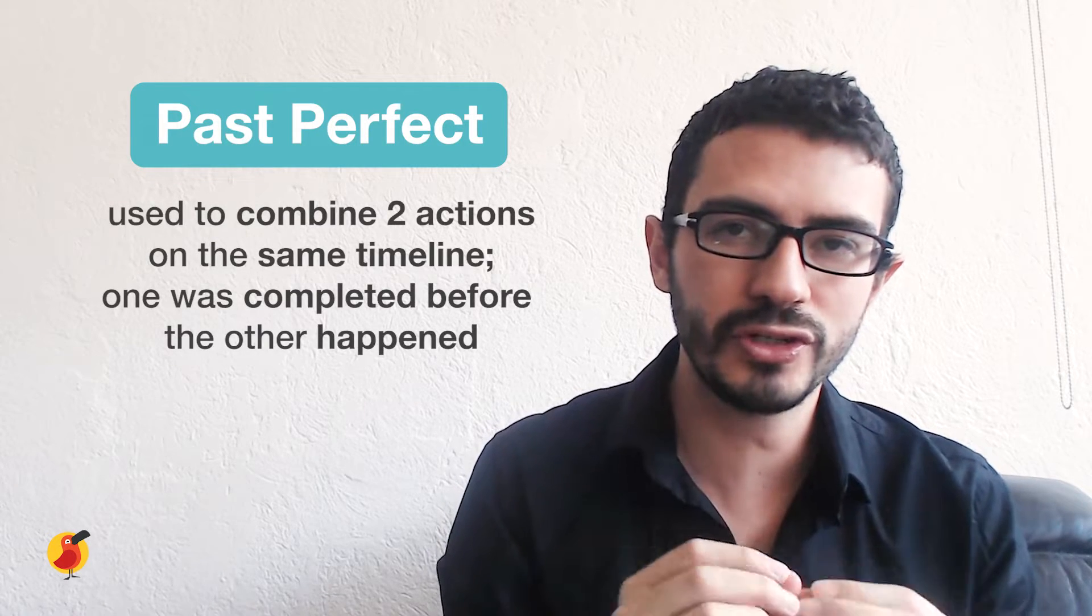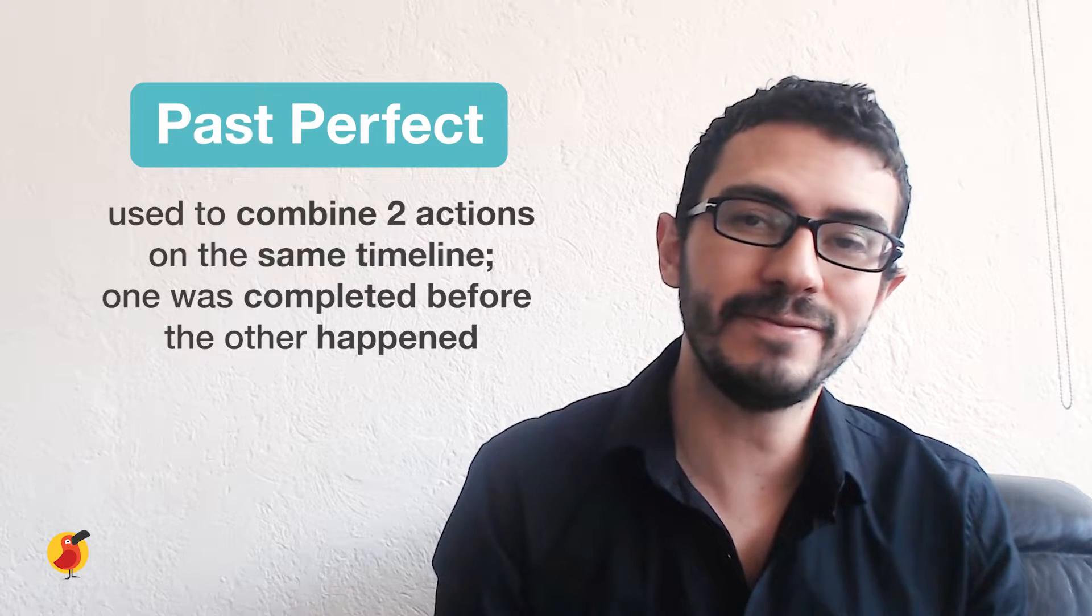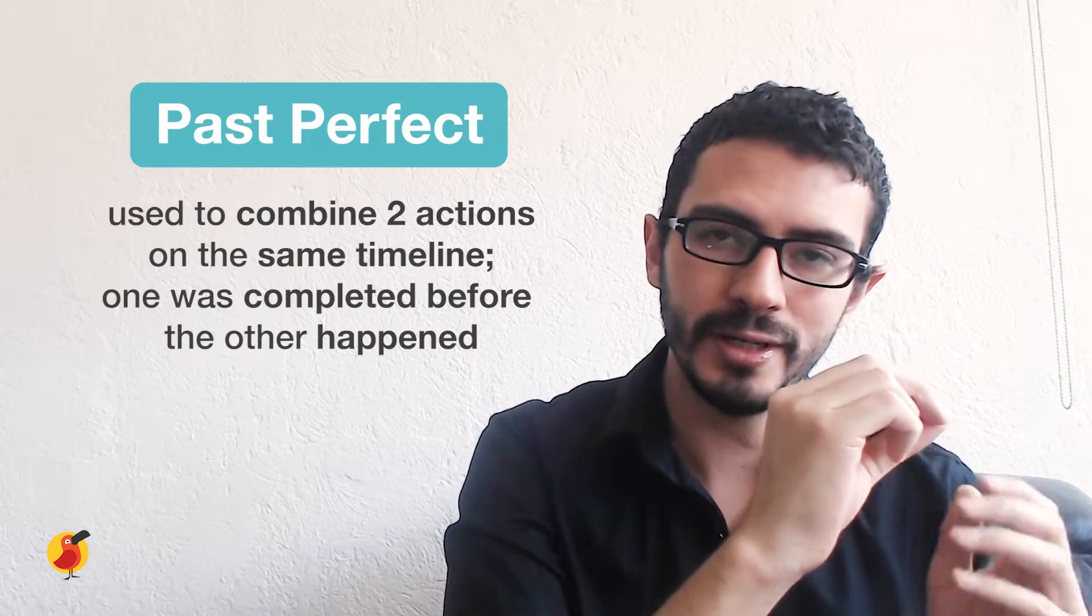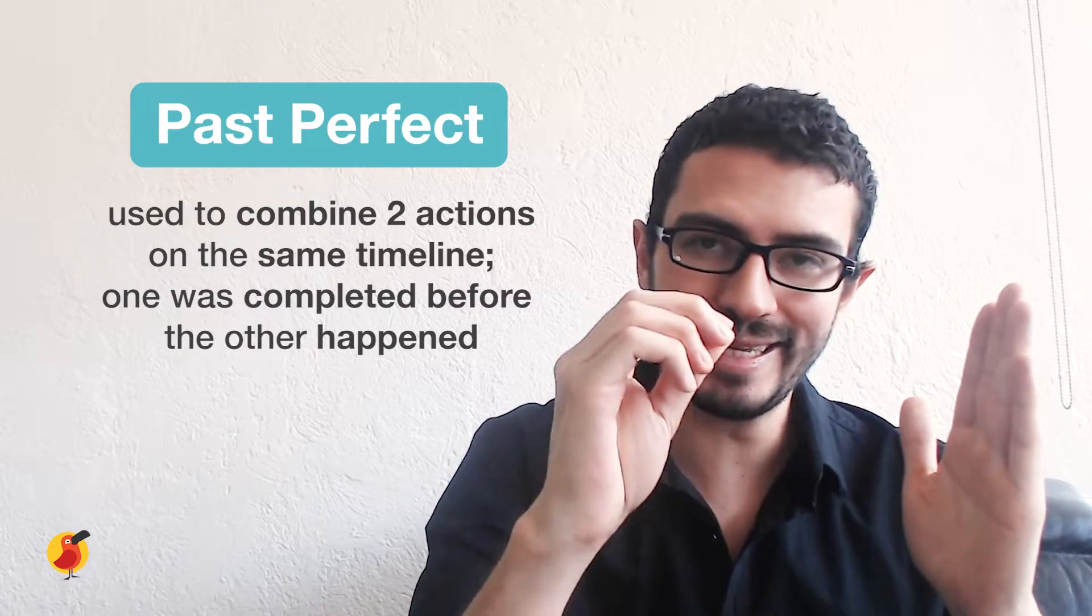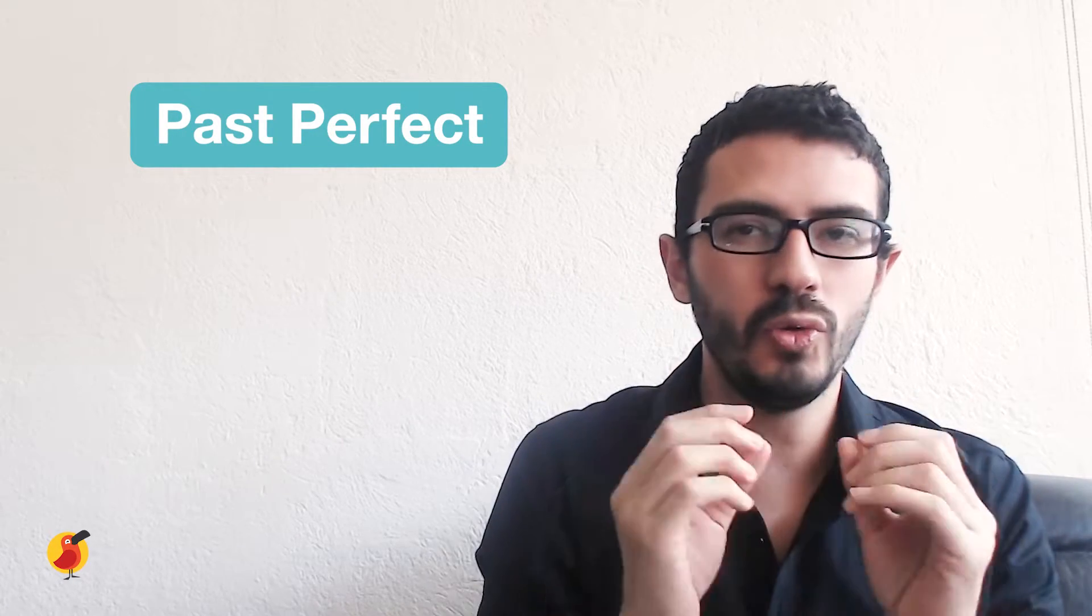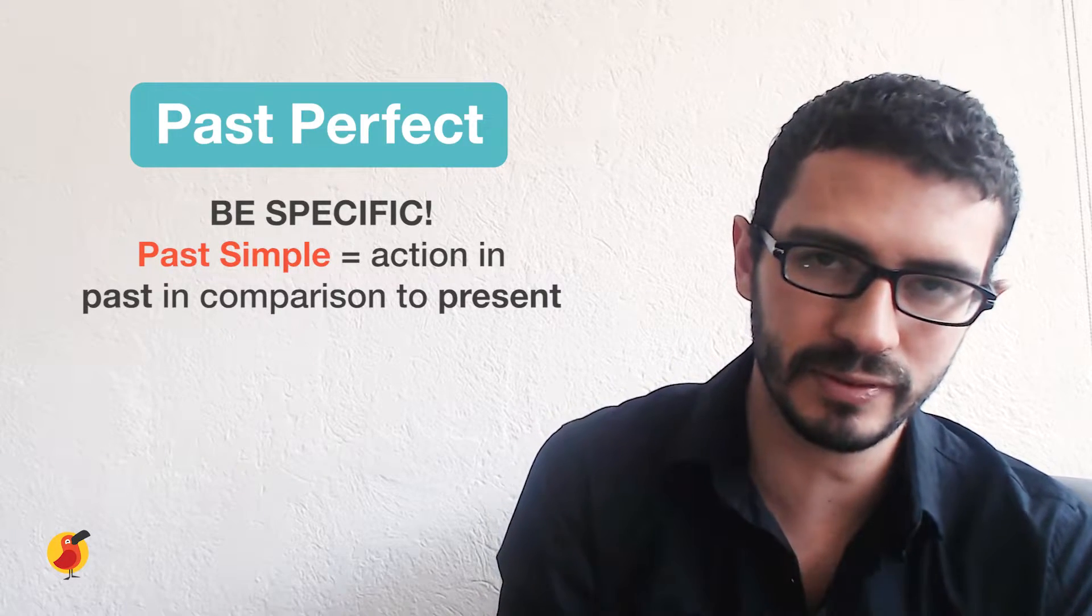So then what is the past perfect? Well, it is used to describe an action that is affecting a particular point to another particular point in the past. You want to be very specific when you're using the past perfect.